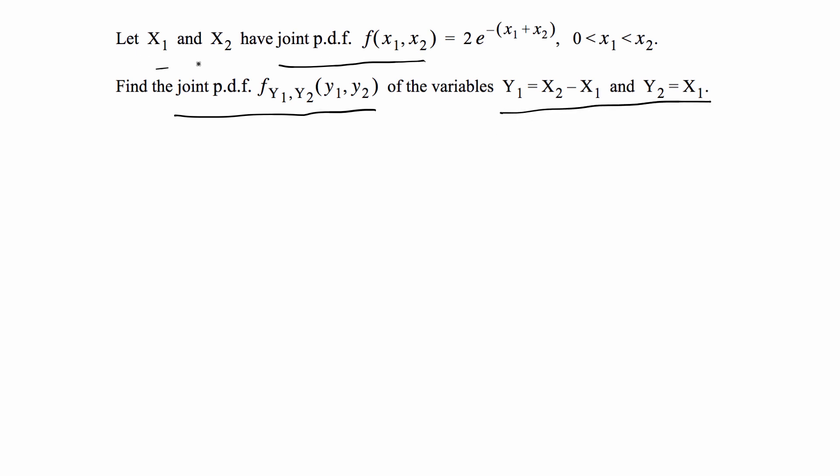You have two random variables and then transform to two new random variables, and you're asked to find the joint probability of the new variables. This is a simple introductory example for a problem like this. Let's get started.